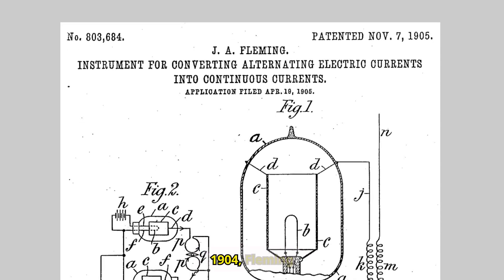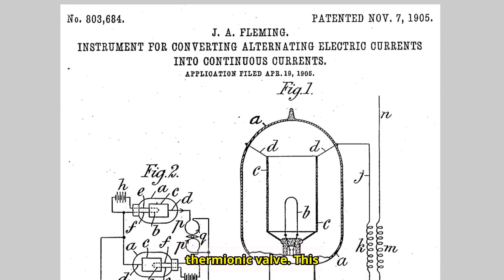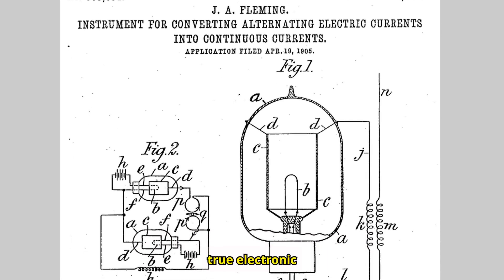On November 16, 1904, Fleming was granted a patent for the thermionic valve. This simple yet ingenious invention was the world's first vacuum tube, and the first true electronic device.